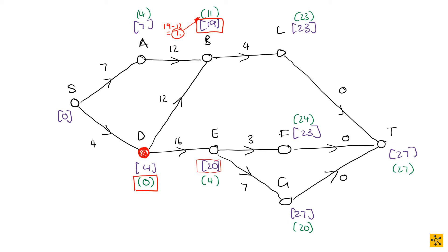In E, it's 20 minus 16 — that gives us 4. So E is critical. Then we can look at F: 23 minus 3 is 20, and 20 is not equal to 24, so F is not critical. Then we can go to G, and 27 minus 7 gives us 20. The latest start time for G is 20, so G is critical.